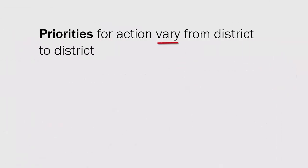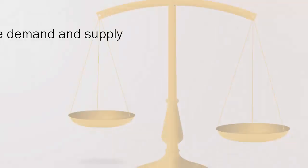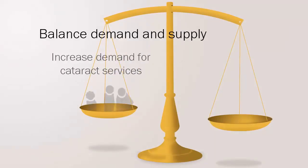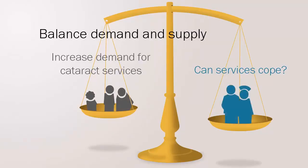Priorities for action vary from district to district. It is also important to remember to balance demand and supply when prioritising actions. For example, before planning to increase demand for cataract services, planners must check whether services will be able to cope with the increase, and vice versa.